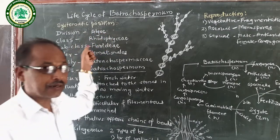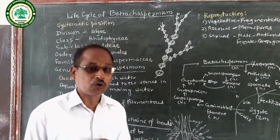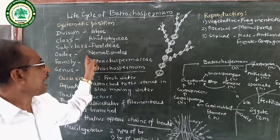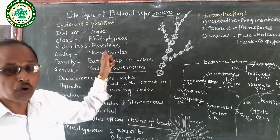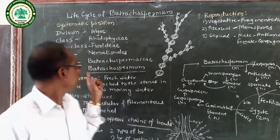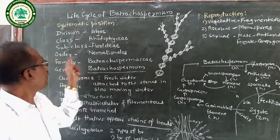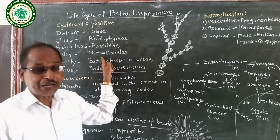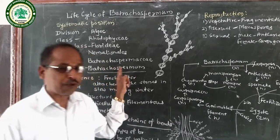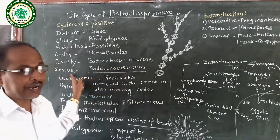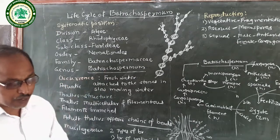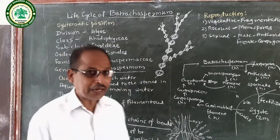Class is Rhodophyceae, Subclass is Florideae, Order is Nemalionales, Family is Batrachospermaceae, and Genus is Batrachospermum.